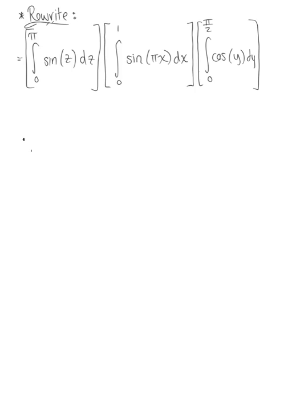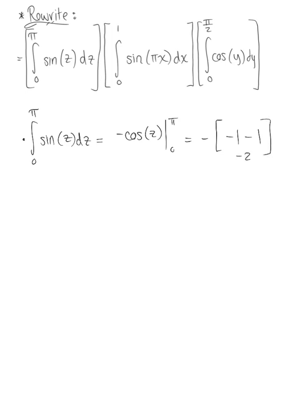Now we can evaluate each individual integral. Starting with z: the integral from zero to pi of sine of z dz integrates to minus cosine of z evaluated from zero to pi. That's minus cosine of pi, which is negative one, minus cosine of zero, which is one — giving us negative times negative two, leaving us with positive two.